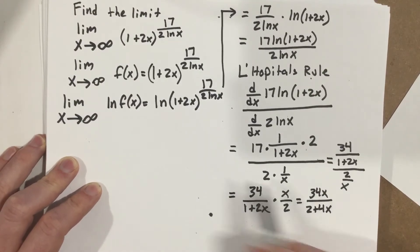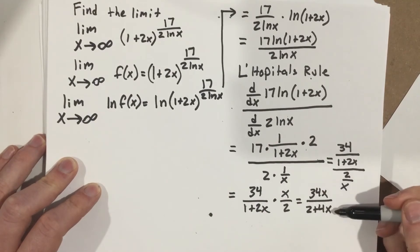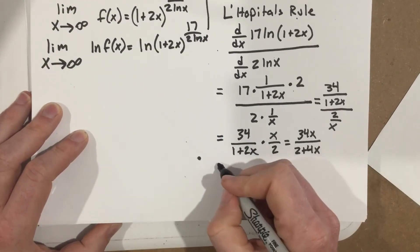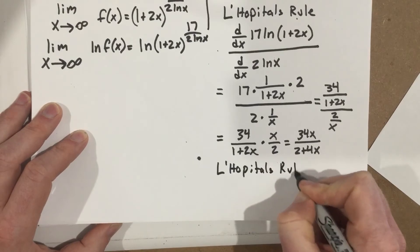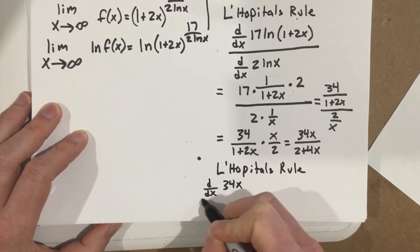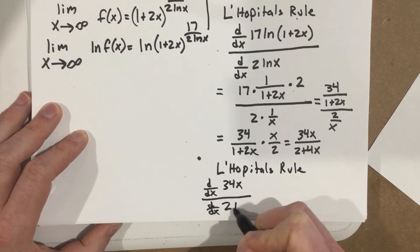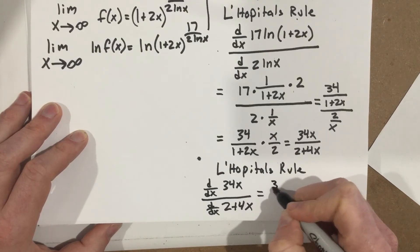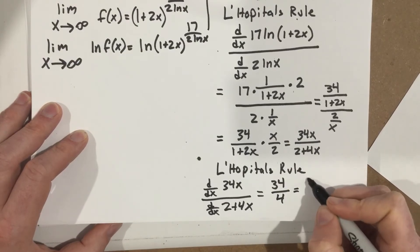I've got to use L'Hôpital's rule again because if I evaluate this limit as x approaches infinity, I get infinity on top and infinity on bottom. So I apply L'Hôpital's rule again: the derivative of 34x over the derivative of two plus four x. The derivative on top gives me 34, and the derivative on the bottom gives me 4, which reduces to 17 over 2.